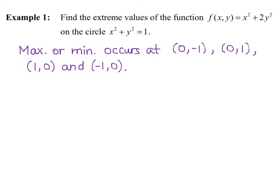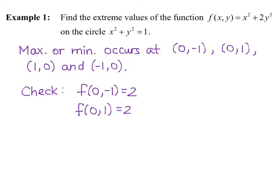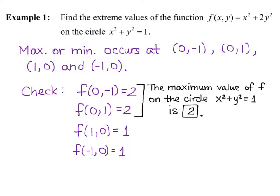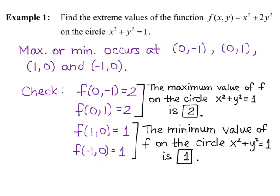We know that maximums or minimums occur at (0, −1), (0, 1), (1, 0), and (−1, 0). We plug these into the original function f(x, y) = x² + 2y² to determine which give maximum values and which give minimum values. The maximum value of f on the circle is 2, and the minimum value of f on the circle is 1.